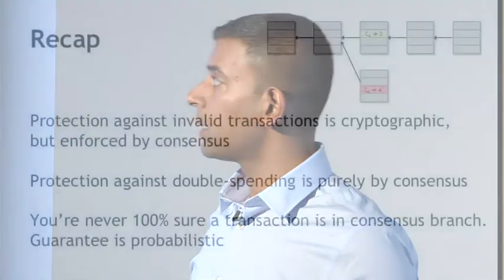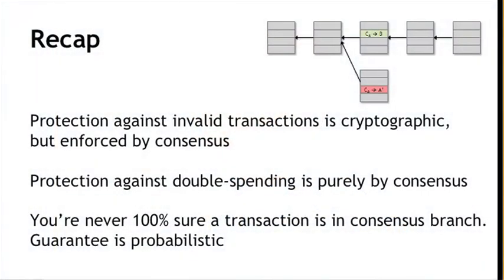So let's recap what we saw here. Protection against invalid transactions — that is, protection against a malicious node simply making up a transaction to steal someone's bitcoins — is entirely cryptographic, but it is enforced by consensus, which means that if a node does attempt that, the only reason that transaction won't end up in the long-term consensus chain is because a majority of the nodes are honest and will treat that transaction as invalid. On the other hand, protection against double-spending is purely by consensus. Cryptography has nothing to say about this, and the two transactions representing a double-spending attempt look identical from the perspective of signatures. It's the consensus that determines which one ends up on the long-term consensus chain. And finally, you're never 100% sure that a transaction you're interested in is on the consensus branch, but this exponential probability guarantee is pretty good — after about six confirmations, there's virtually no chance that you're going to go wrong.